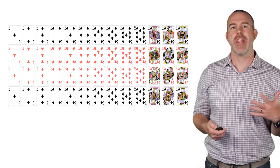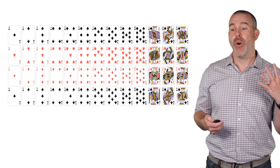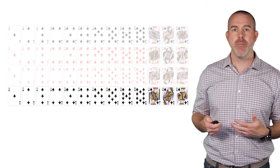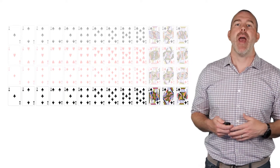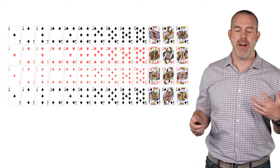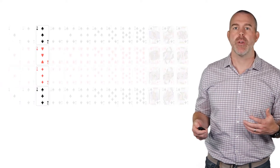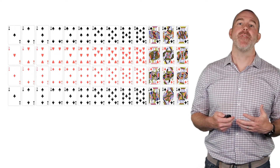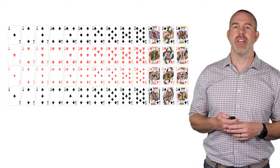Let's do an actual example using a deck of cards. Here's a standard deck where there are four different suits — spades, hearts, diamonds, clubs — and 13 different ranks: ace, two, three, four, and so on, all the way down to jack, queen, and king. Let's define a couple of events.